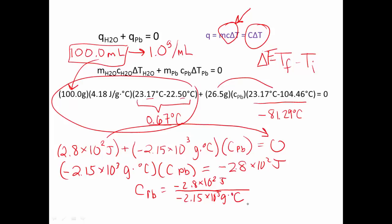The two negatives will cancel out to give us a positive number and we're allowed two significant figures. So we get 0.13. Now look at these units. Joules divided by grams degrees Celsius. They work out to be the normal units for specific heat. And that is our answer.